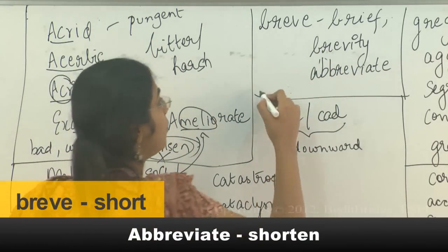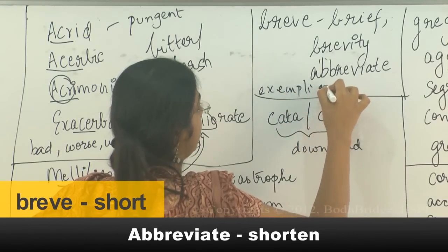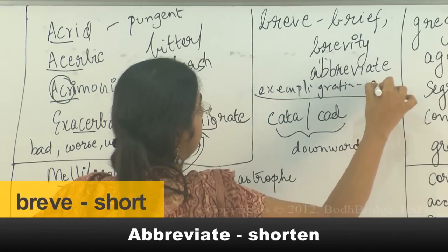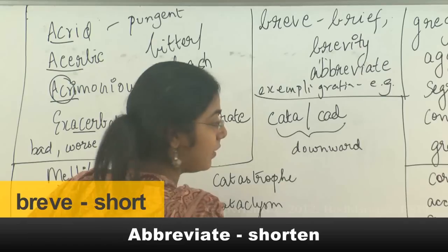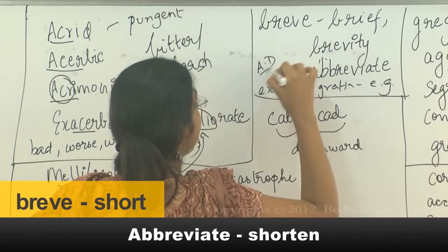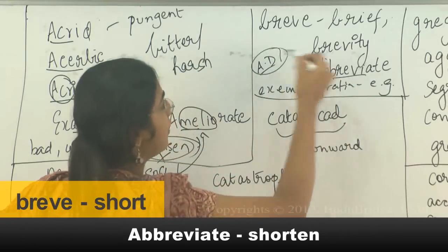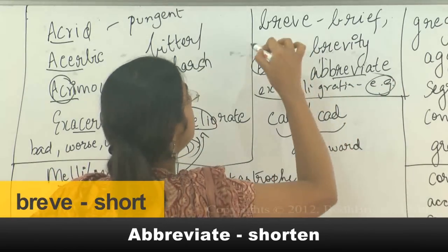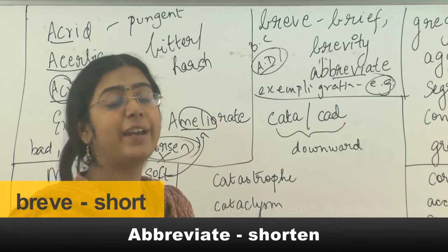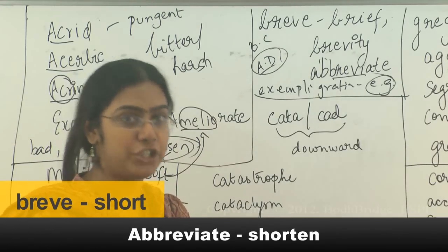Abbreviate: for example, 'exempli gratia' becomes 'e.g.', 'Anno Domini' becomes 'AD', and 'Before Christ' becomes 'BC'. When you abbreviate, you shorten a word or phrase. That shortened form is the abbreviation.